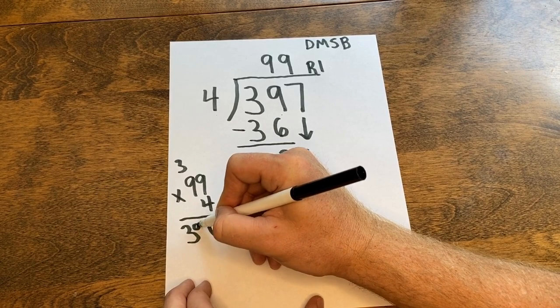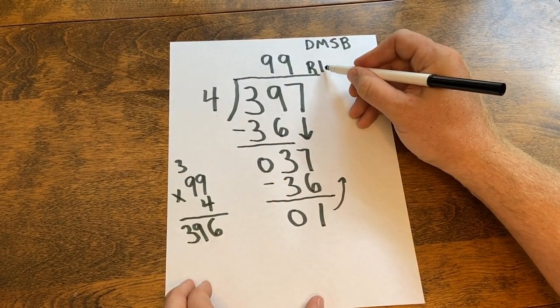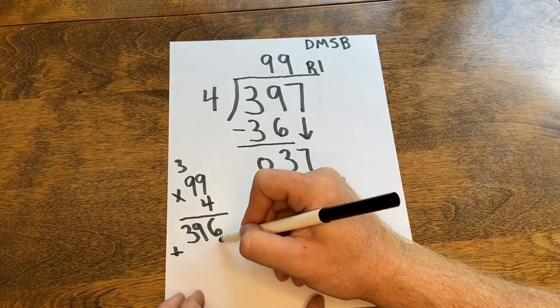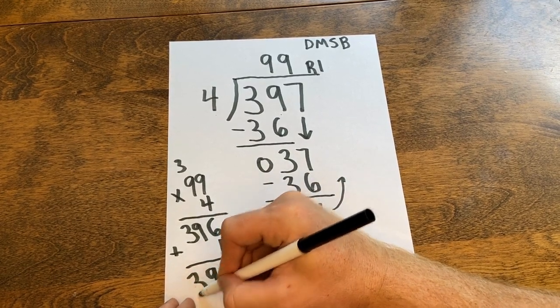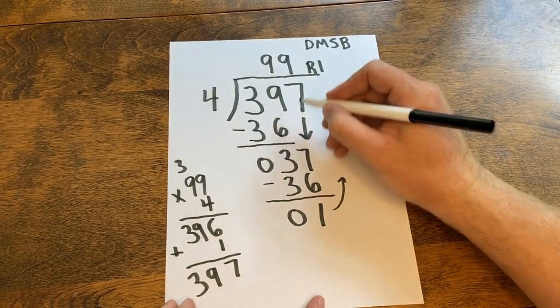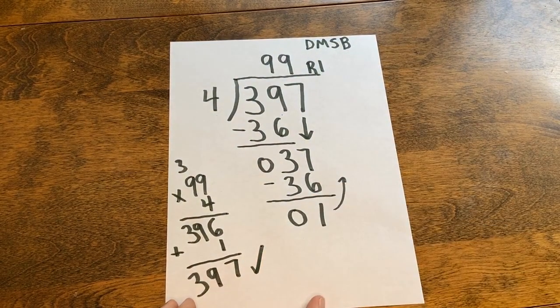And now I'm going to add my remainder. So 396 plus 1. I end up with 397, which matches, so I am correct. Good luck.